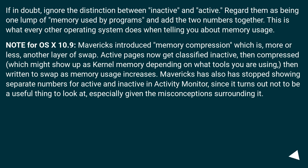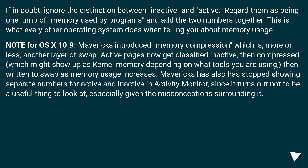Note for OS X 10.9: Mavericks introduced memory compression, which is more or less another layer of swap. Active pages now get classified as inactive, then compressed, which might show up as kernel memory depending on what tools you are using, then written to swap as memory usage increases. Mavericks has also stopped showing separate numbers for active and inactive in Activity Monitor, since it turns out not to be a useful thing to look at, especially given the misconceptions surrounding it.